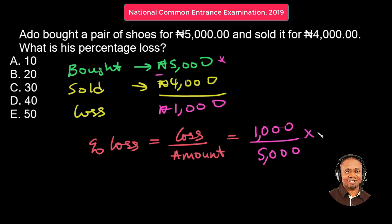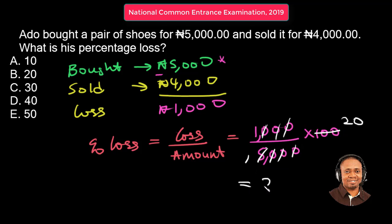Then multiply by 100. The zeros cancel out. 5 into 5 is 1, and 5 into 100 is 20. So we have the percentage loss as 20%. The answer, option B, is the right answer.